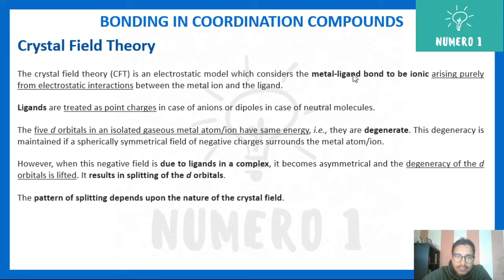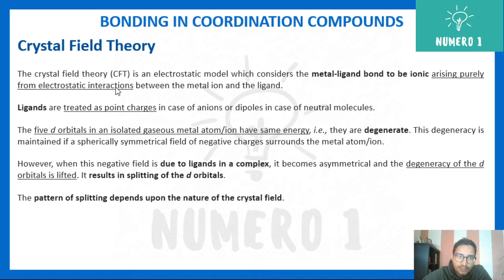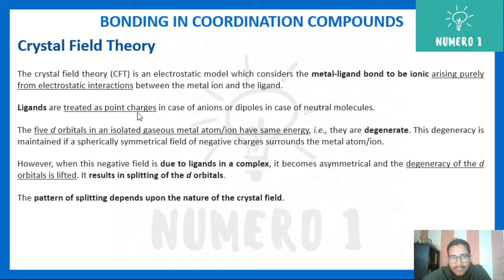In CFT, we consider the metal-ligand bond to be ionic, arising purely due to electrostatic forces of interaction between the metal ion and the ligand. The ligands are treated as point charges — either neutral or negatively charged in case of anions, and as dipoles in case of neutral molecules.